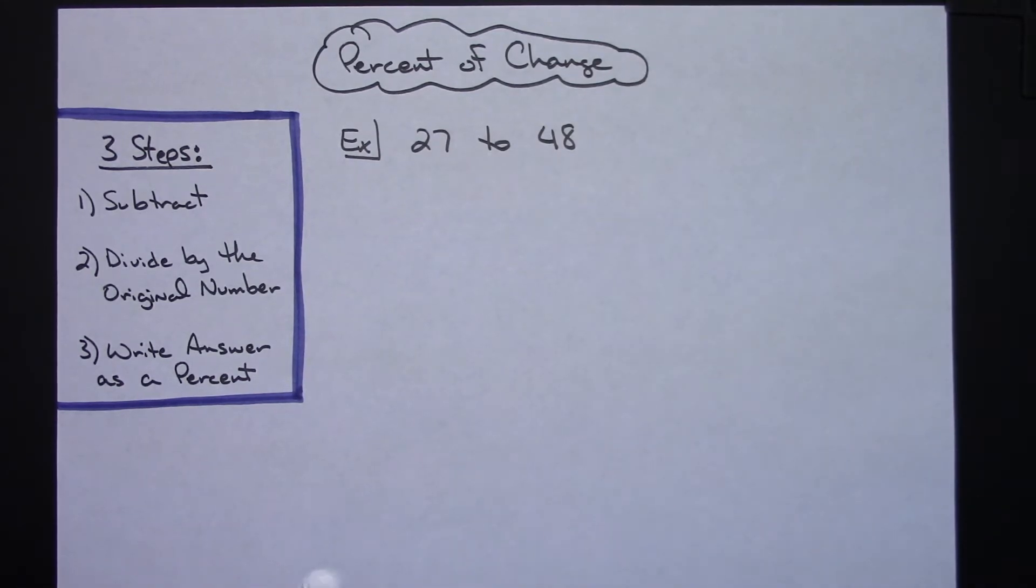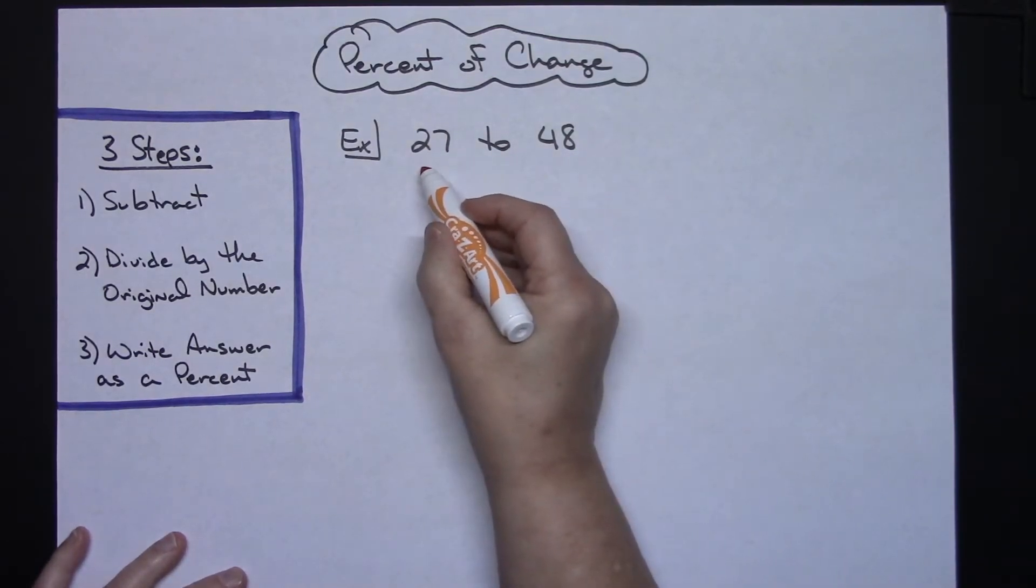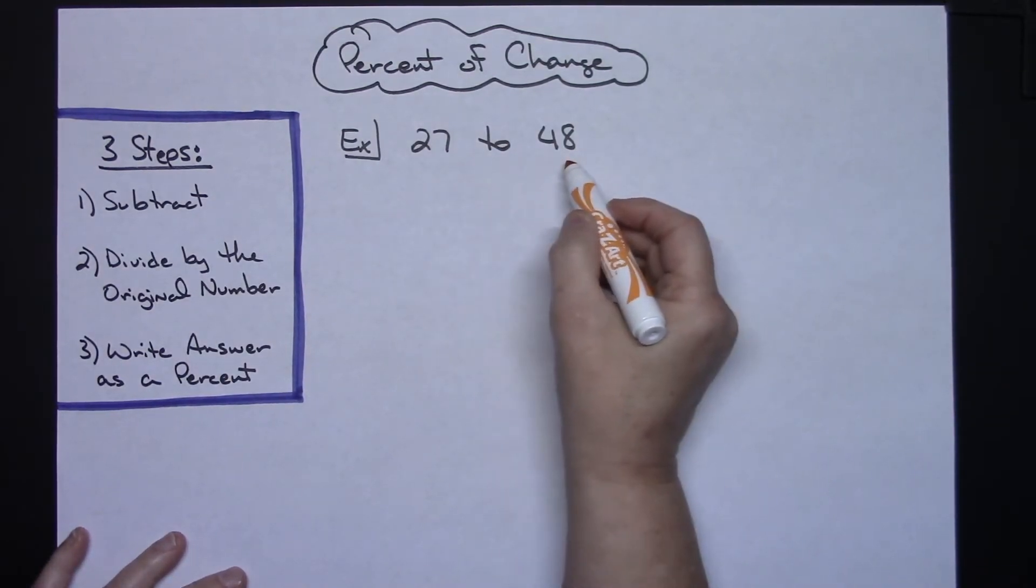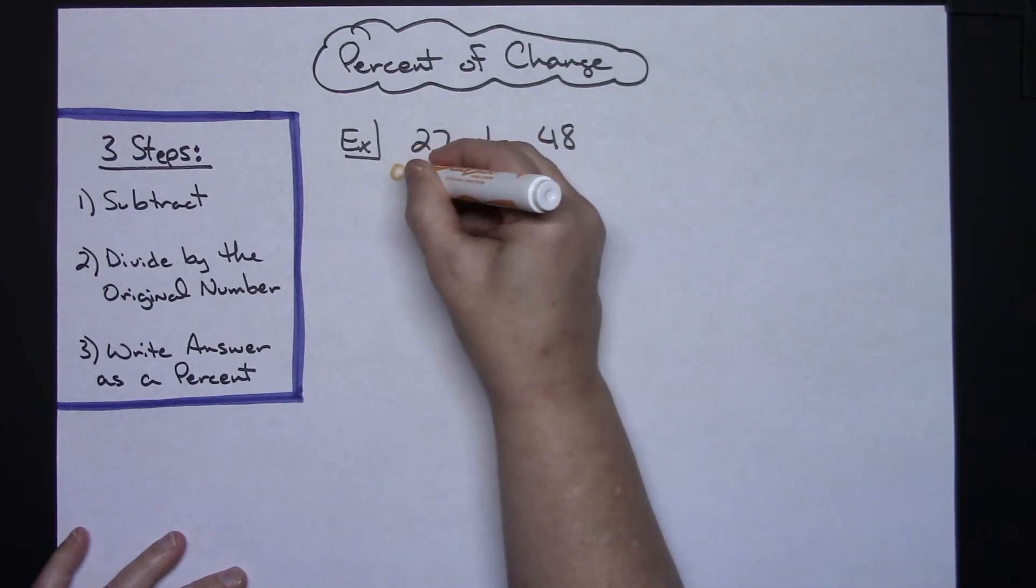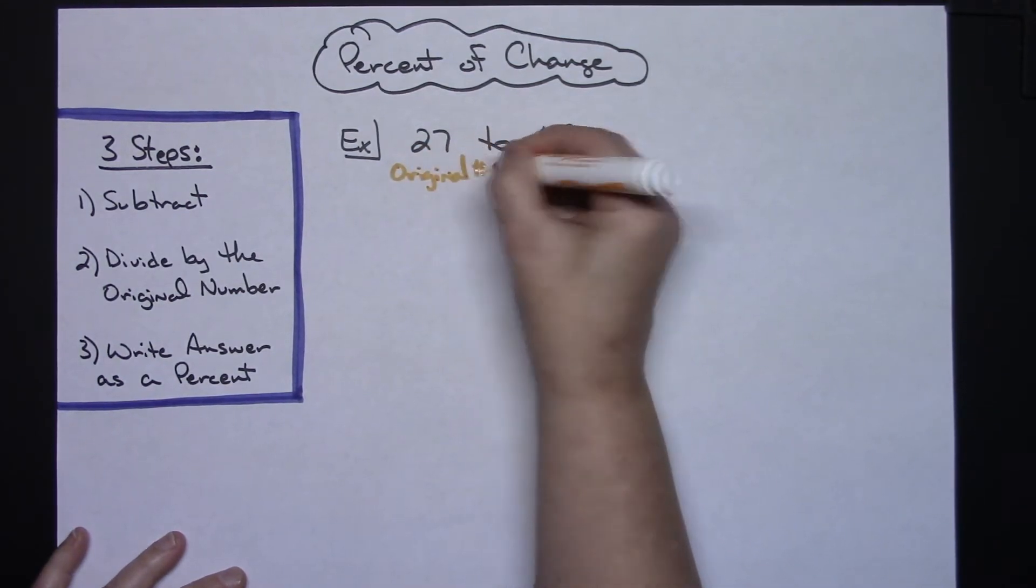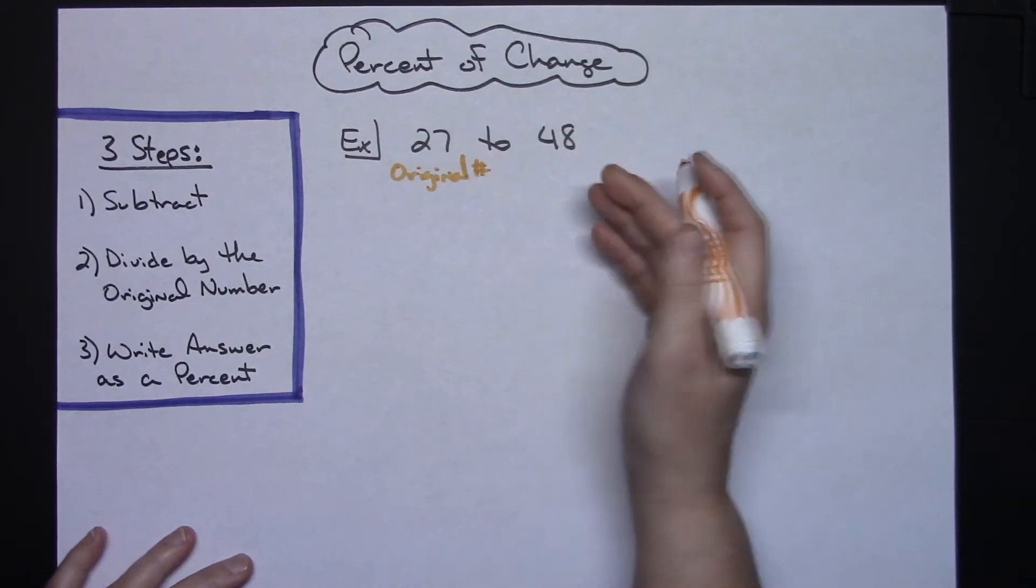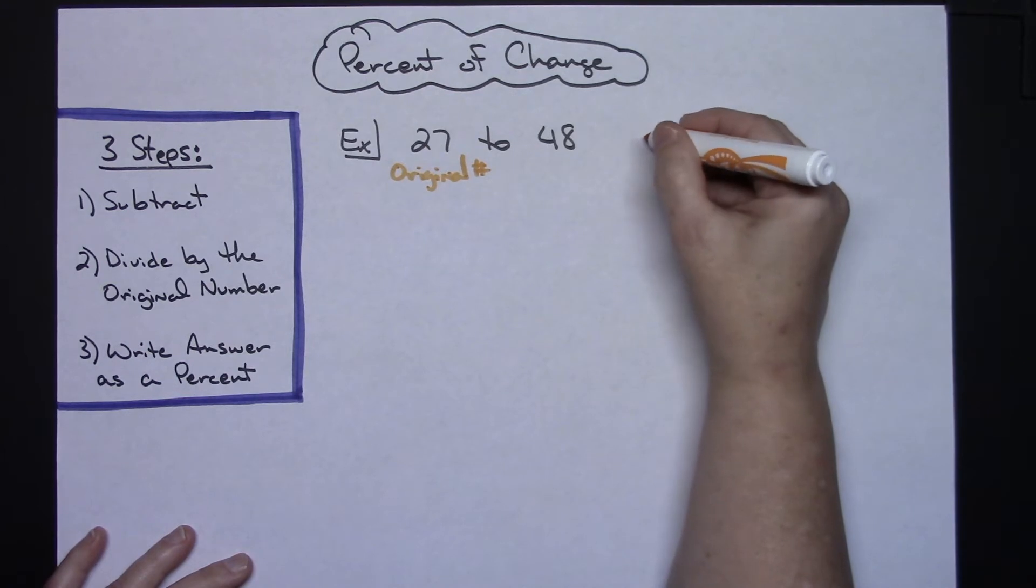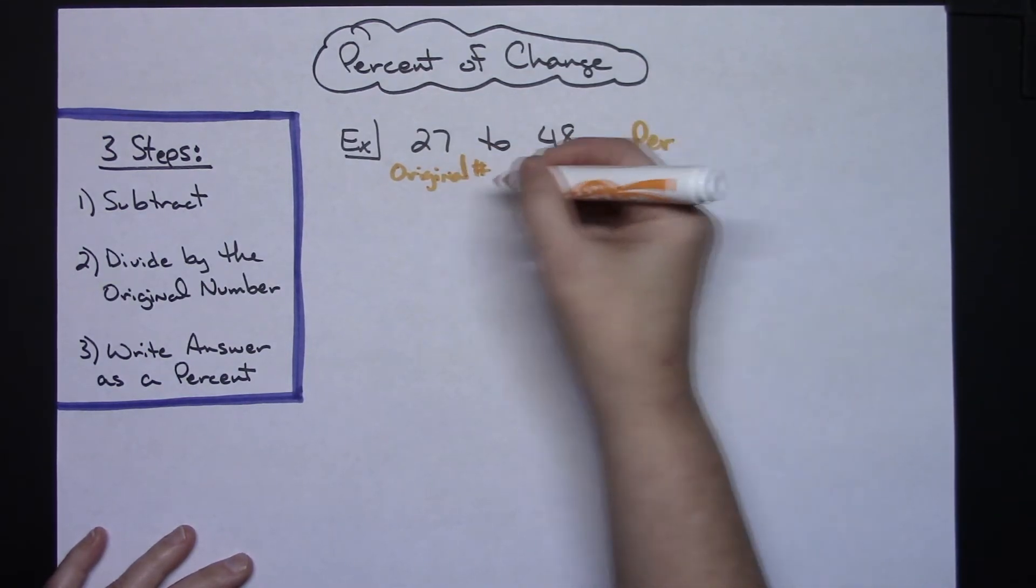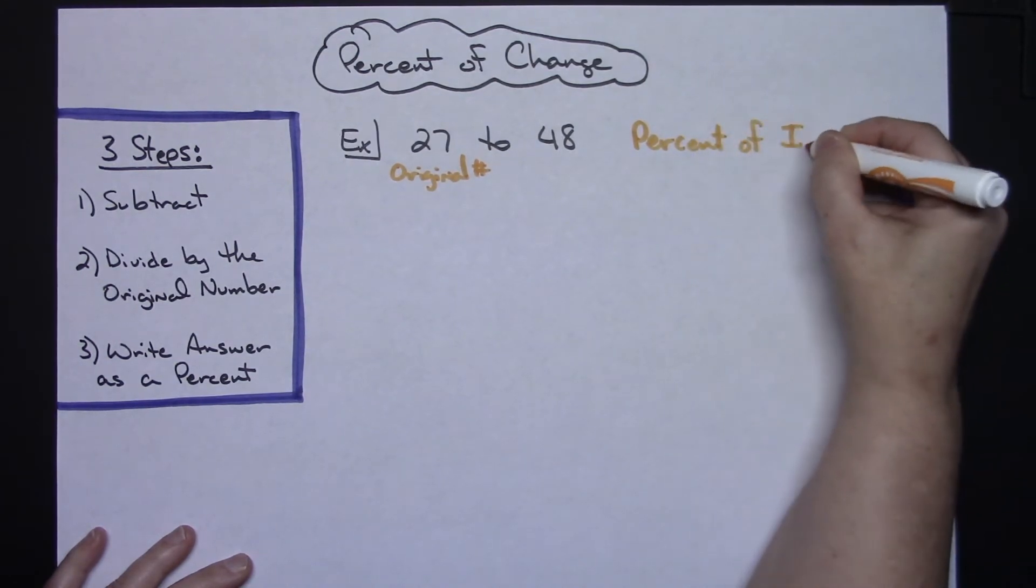Now as you look at this, we're going from 27 to 48. So my original number is 27 because that comes first, and then I'm going up to 48. So this actually is a percent of increase because the two numbers increased. I went from 27 to 48, so this is a percent of increase.